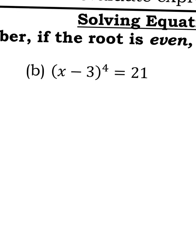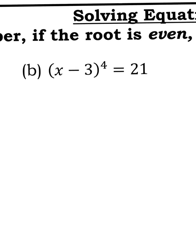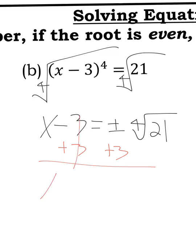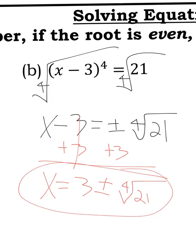But on part B, my answer is going to have a plus or minus with it. We're going to take the 4th root of each side. The 4th root of 21 does not simplify. So I have x - 3 = ±⁴√21. Then I add 3 to the other side, and my final answer is x = 3 ± ⁴√21.